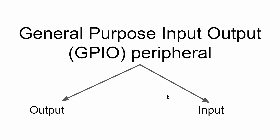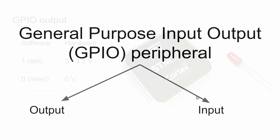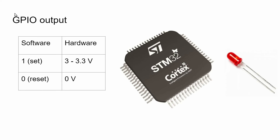We're going to start learning microcontrollers from the General Purpose Input Output peripheral, or GPIO peripheral. In this peripheral we have two modes: output mode as well as input mode. Let's start from GPIO output mode.